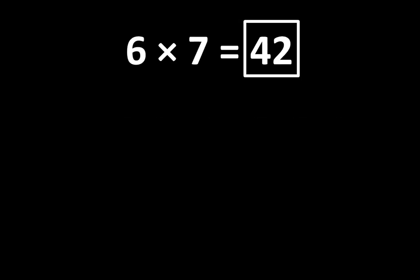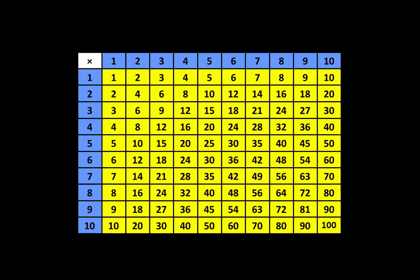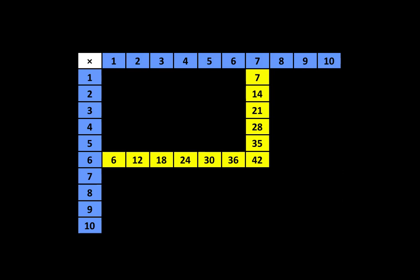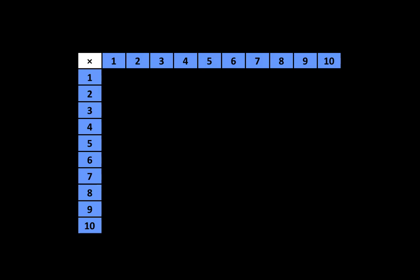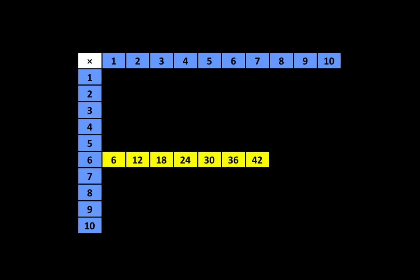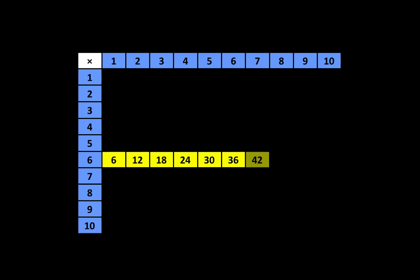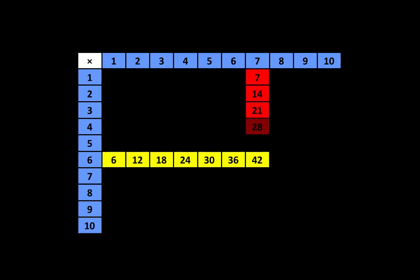6 times 7 is equal to 42, and there are many more important ideas. When we look at the multiplication table, we can see that 6 times 7 is equal to 42. 42 is a multiple of 6, and 42 is also a multiple of 7. In fact, 42 is the 7th multiple of 6, and 42 is also the 6th multiple of 7. Understanding that 42 is a multiple of both 6 and 7 is very important.